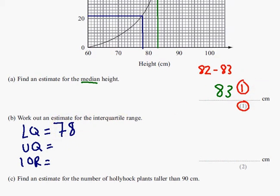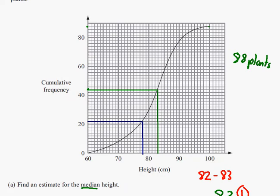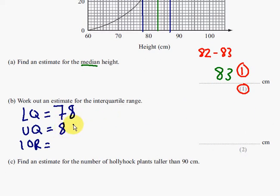Now the upper quartile is the first three quarters. So if there's 88 plants, the first quarter is 22. So 66 is going to be my upper quartile. 2, 4, 6. So the plants up to, sorry, the first 66 plants are up to the height of 80, 1, 2, 3, 4, 5, 6, 7, 87. So my upper quartile is 87.